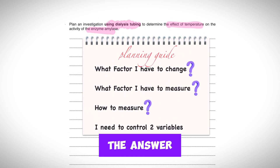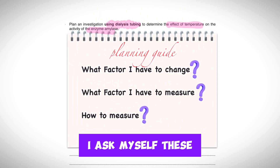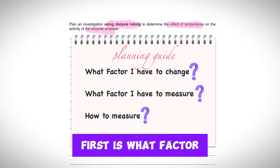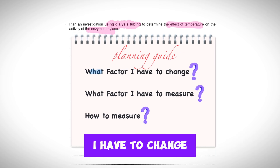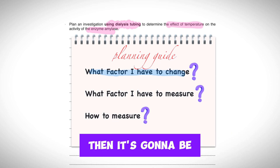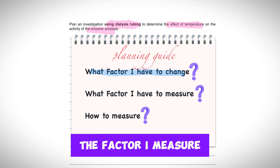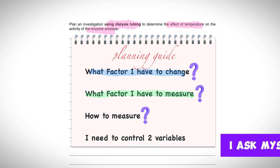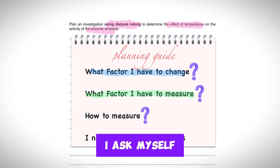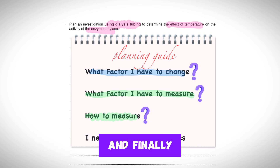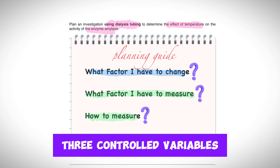Before I start writing the answer, I ask myself these four questions. First, what factor do I have to change — that's the independent variable. Then it's the factor I measure — that's the dependent variable. I ask myself how I'm going to measure that dependent variable. And finally, I mention two or three controlled variables.